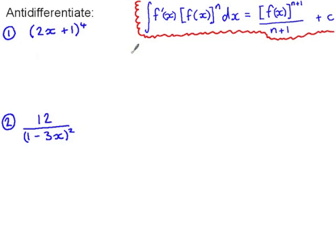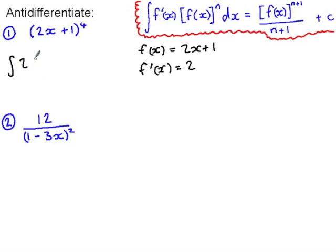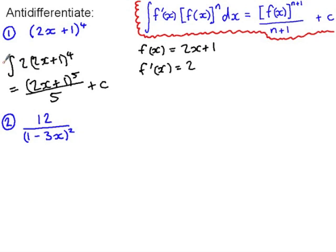Continuing on, we define f(x) each time. So f(x) is 2x+1 and the derivative of that is 2. We know that the integral of 2·(2x+1)^4 is (2x+1)^5 all over 5. But I don't want 2 of these, I want 1. So I need to halve this, and the result is (2x+1)^5 all over 10.